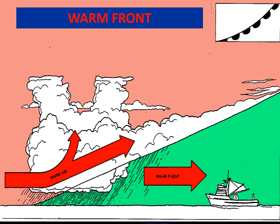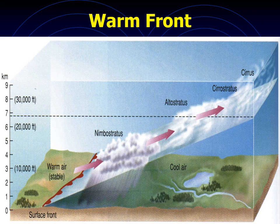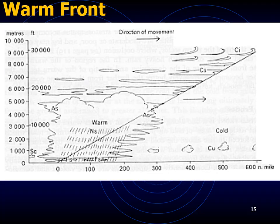Warm fronts have a lesser slope, so the passage of the front takes longer and the weather changes are more spread out and less violent than at a cold front. As you approach a warm front, pressure will steadily fall in advance, remain steady during passage, and change to a slow fall afterwards. The wind will shift to southwesterly or south in the northern hemisphere and northwesterly or north in the southern hemisphere, freshening and then veering in the northern hemisphere or backing in the southern hemisphere.